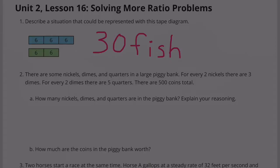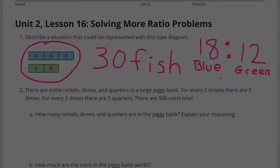There are a total of 30 fish in a lake, 18 bluefish and 12 greenfish. There are 30 fish in a lake, 18 bluefish to 12 greenfish.